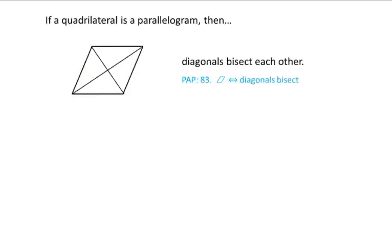Next, if a quadrilateral is a parallelogram then the diagonals bisect each other. That means that the point in the middle where the two diagonals intersect each other is the midpoint of each diagonal.